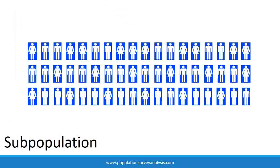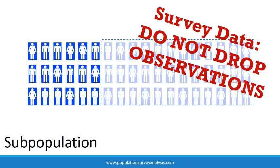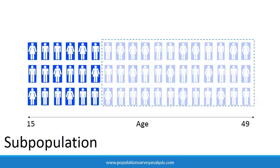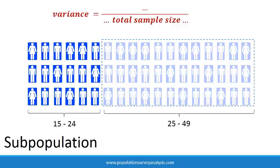In non-survey data, we can perform analysis in subpopulations by excluding or dropping observations that are not in the subpopulation. You cannot drop observations in survey data analysis, or your variance estimates will be biased. In survey data analysis, we must analyze data according to the sample design. If the sample is designed to be representative of women age 15 to 49, but we are only analyzing women age 15 to 24, we still need to keep women age 25 to 49 in the dataset. Stata needs the total number of observations according to the sample design in the denominator of the variance estimator.